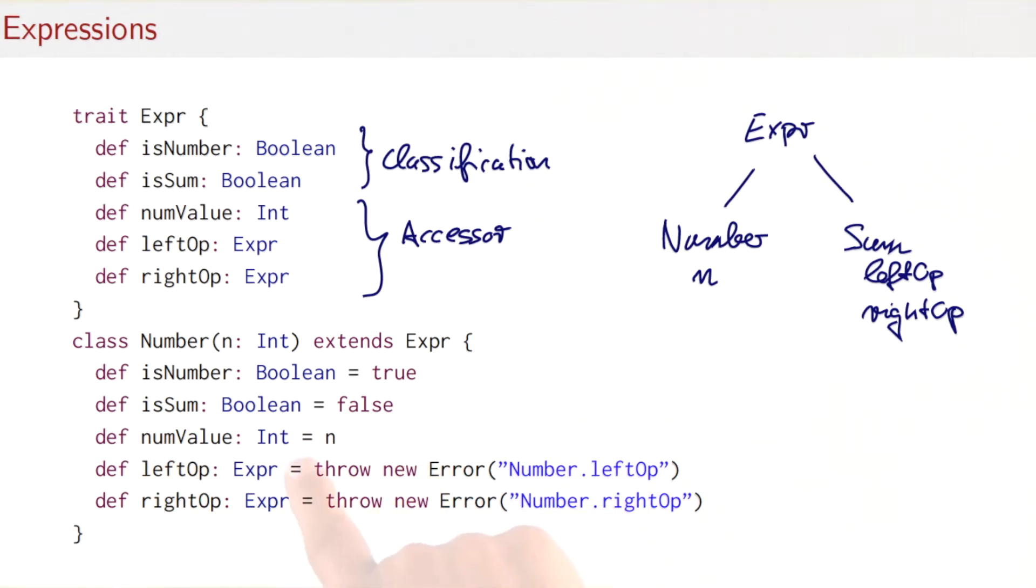The numeric value of a number is just the number we pass into it. And the left operand and the right operand, they are operations that are not applicable to numbers. So both of them would throw an error that says, you have called a leftOp or a rightOp method on Number. And that's illegal.